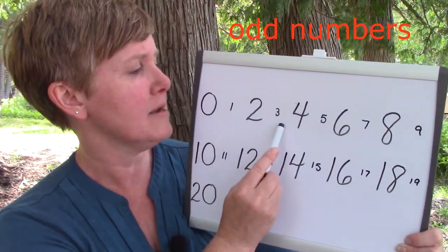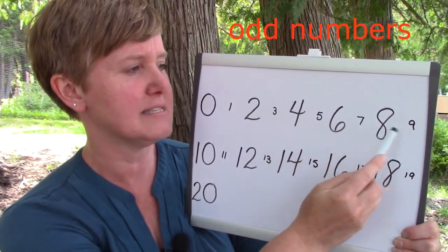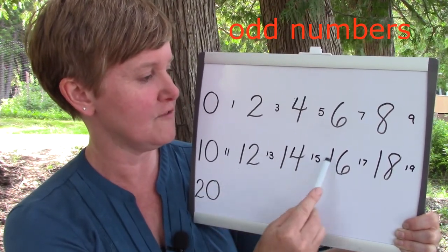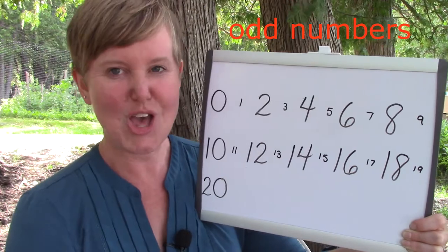On our board here my bigger numbers that I've drawn are our even numbers. And the teeny tiny numbers in between that we skipped when we were singing our skip counting song, those are our odd numbers. Let's take a look and see what they are. They're the numbers 1, 3, 5, 7, 9, 11, 13, 15, 17, and 19.